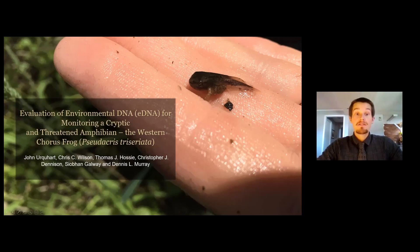John Urquhart and Chris Denison will wrap up with the evaluation of eDNA for monitoring cryptic species—specifically the western chorus frog. Chris Denison clarifies he is presenting on behalf of his colleagues. On behalf of collaborators, he introduces their ongoing research on the potential use of environmental DNA for monitoring the threatened western chorus frog.